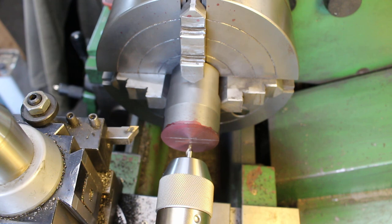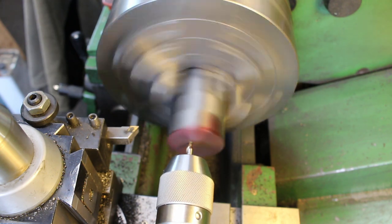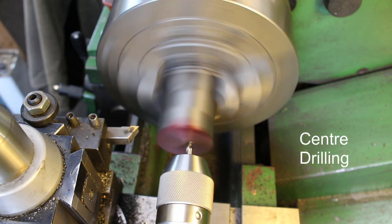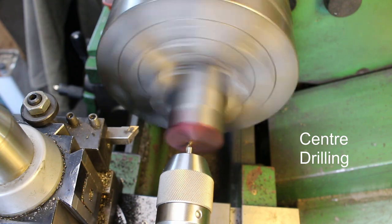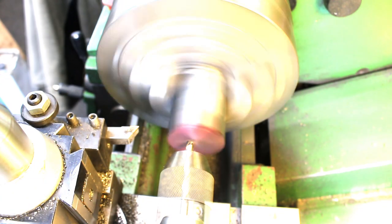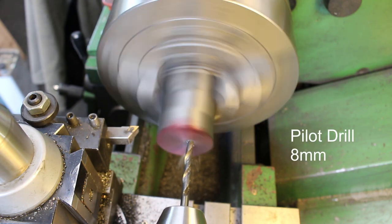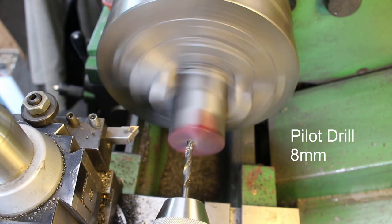I'm going to take the unusual step of drilling and reaming the offset hole before finish turning the outside diameter. It's a bit of a long winded way to go about the job, but it's my way.